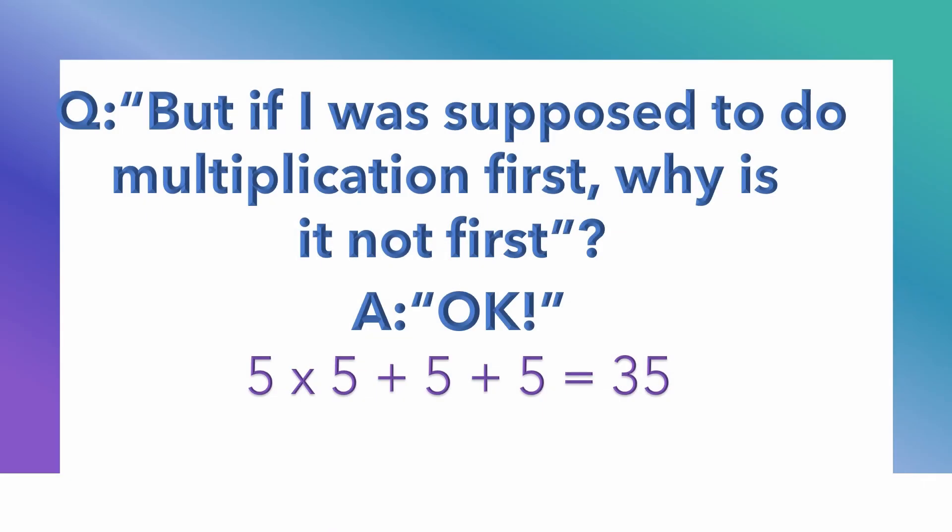A lot of people ask: if I was supposed to do the multiplication first, why isn't it listed first in the equation? My answer is: if I put the 5 times 5 at the front — 5 times 5 plus 5 plus 5 — and you work it out even with a left-to-right method, your answer is still going to be 35. So the correct answer to this problem is 35.